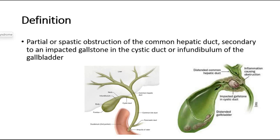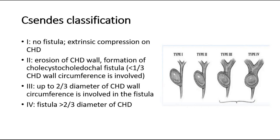Mirizzi's syndrome is classified using the Sanders classification, where there are four types. Type 1: there is no fistula formed; however, there is extrinsic compression on the common hepatic duct. Type 2: there is erosion of the wall of the common hepatic duct and formation of a cholecystocholedochal fistula, involving less than one-third of the wall circumference. Type 3 involves up to two-thirds of the common hepatic duct wall circumference. Type 4 involves more than two-thirds of the common hepatic duct.